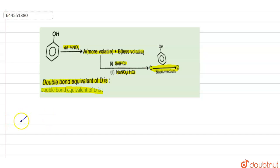In this given reaction, phenol is reacting with dilute HNO3, hence two products will be coming out.